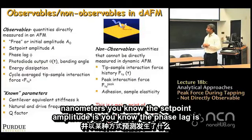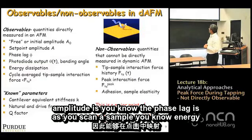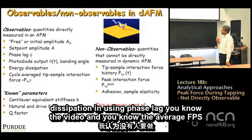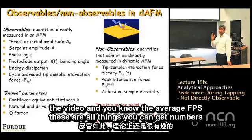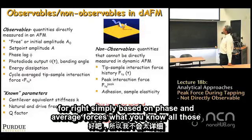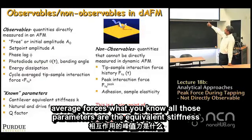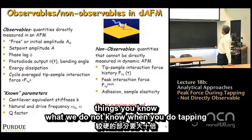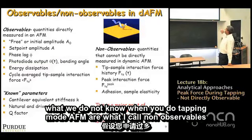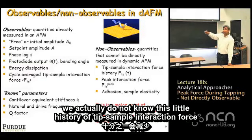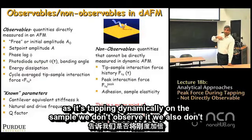You can also get energy dissipation using phase lag, the virial, and the average tip-sample force. These are all quantities you can get numbers for based on phase and average forces. The cantilever parameters — equivalent stiffness k, natural frequency, Q factor — are also known. What we do not know in tapping mode AFM are the non-observables: the actual history of the tip-sample interaction force as it's tapping dynamically on the sample.